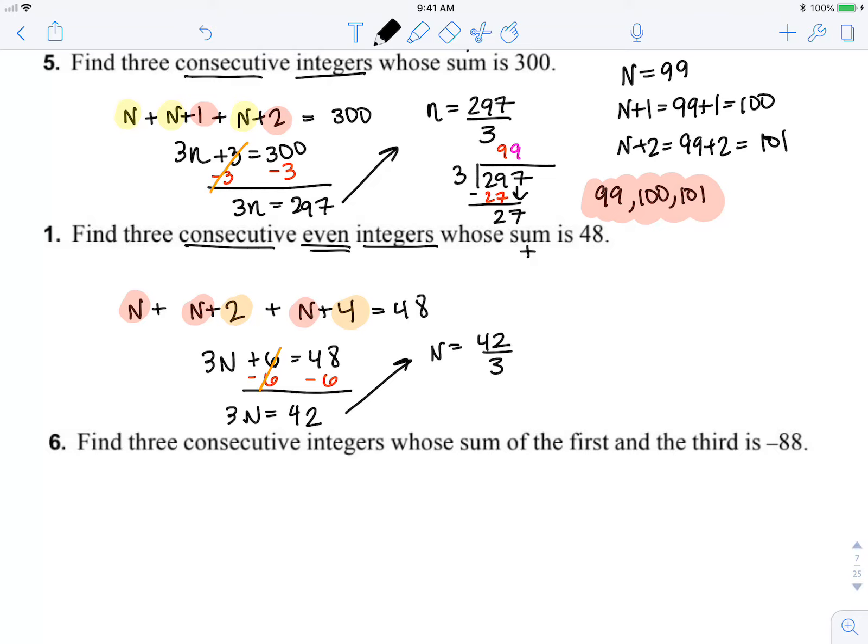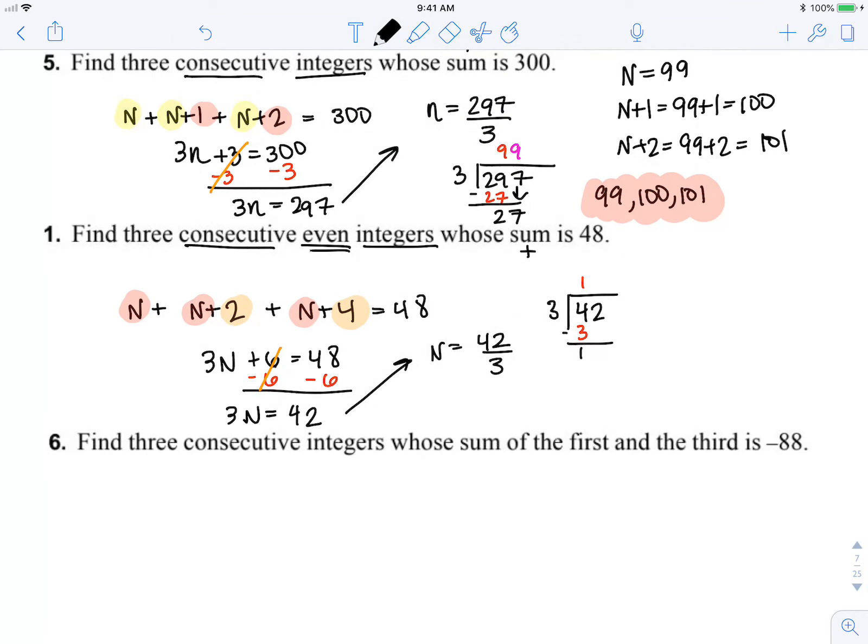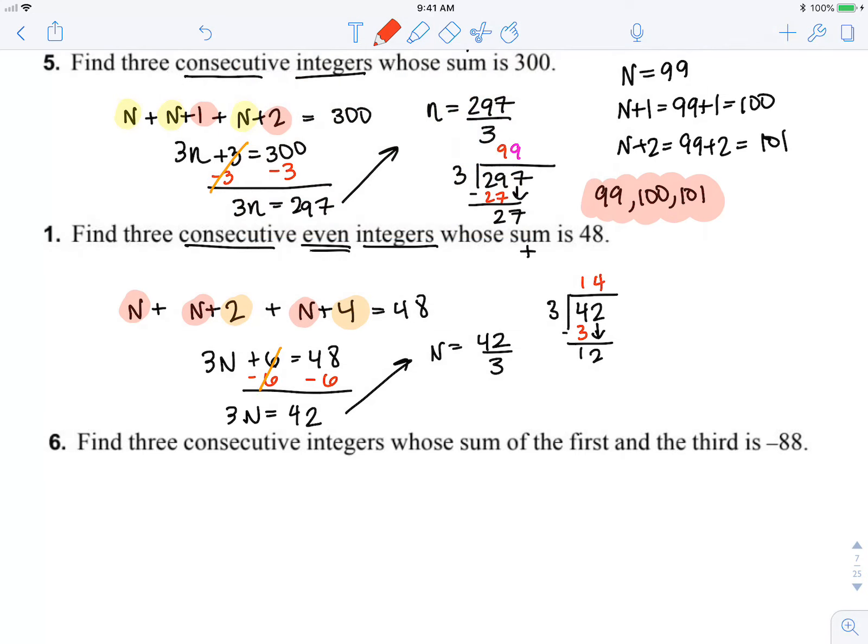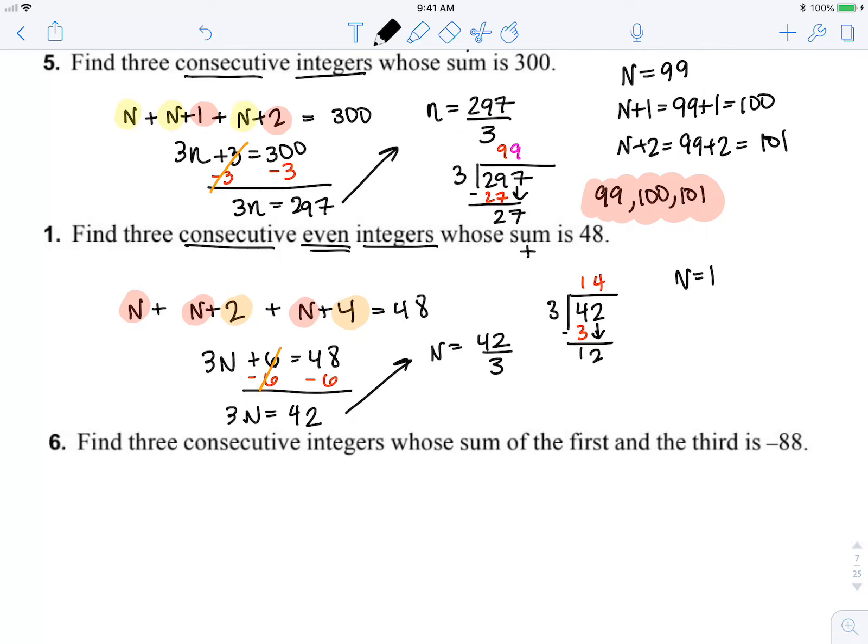By 3. Now if you don't know what that is, we can do some more long division. 42 divided by 3: 3 goes into 4 once, I multiply I get 3, I subtract I get a remainder of 1, bring down that 2, 3 goes into 12 four times. So we know that n equals 14, so that makes n...